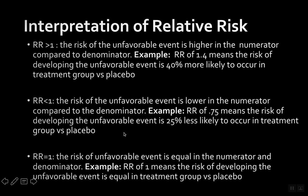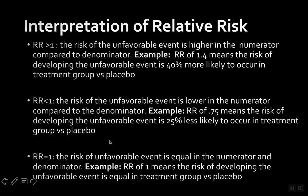That interpretation is because the treatment group is on top. But if the placebo group is on top and you get 0.75, you could say the risk is 25% less likely to occur in the placebo group compared to the treatment group. It depends on which group comes first in the ratio — in the numerator compared to the denominator.